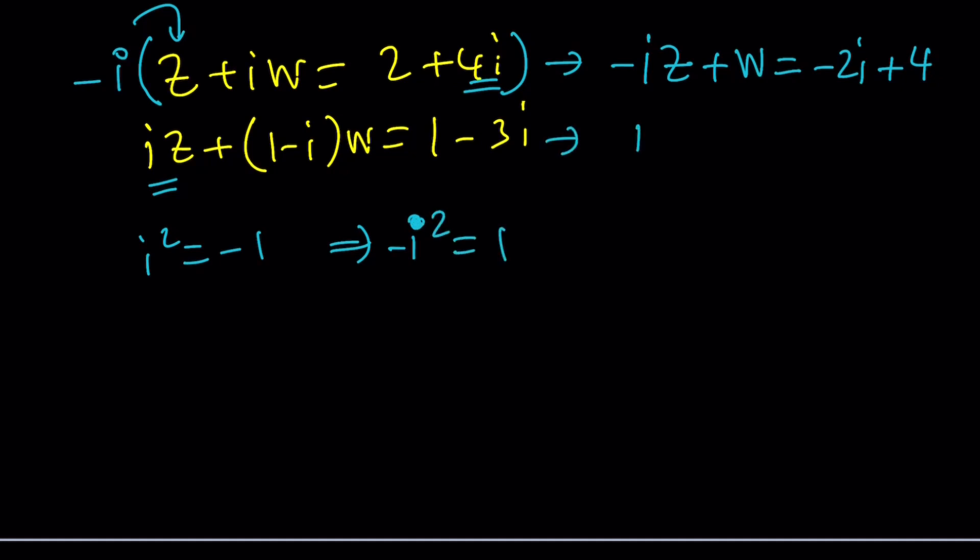This equation is obviously going to stay the same. The second equation is unchanged, the bottom one. Let's go ahead and add these two equations. IZ is going to cancel out. Now we have to add the coefficients of W because it's like adding like terms. This is 1W, this is 1 minus IW. So that gives us 1 plus 1 minus I, which is 2 minus I times W.